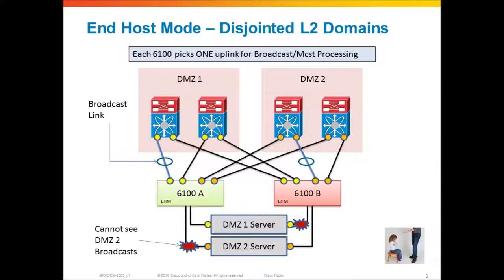You have multiple uplinks out of the 6100, and you may think to yourself: I'll take a couple of uplinks, put those on DMZ1, create a static pin group for that, take the other uplinks and put them on DMZ2, create another static pin group, and make sure the right servers are in the right pin groups. Well, it may appear to work initially, but there are problems. The key problem is that the 6100 in end-host mode assumes that all of its uplinks are in the same common upstream layer 2 domain.